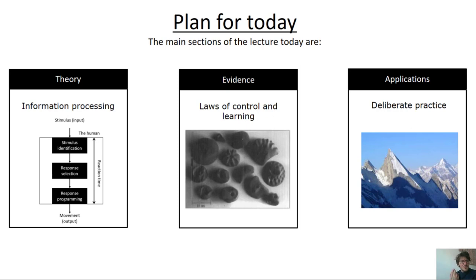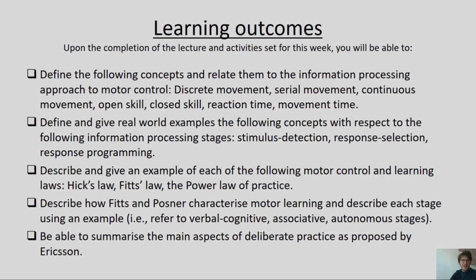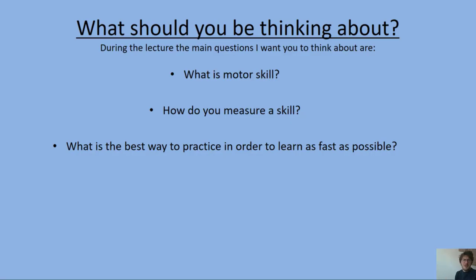The plan for today: we're going to talk about a theory called information processing, look at some of the evidence underpinning this theory, and talk about one of its key applications — deliberate practice. Three key questions I want you to think about during this lecture: firstly, what is a motor skill and how do we define it? Second, how do you go about measuring a skill? And finally, what's the best way to practice in order to learn as fast or as well as possible?